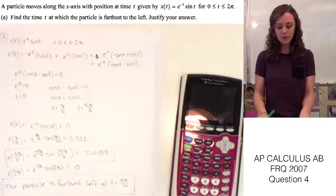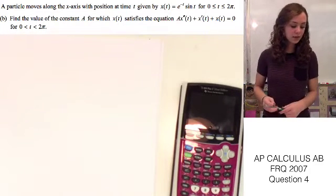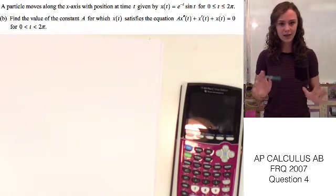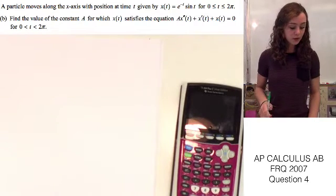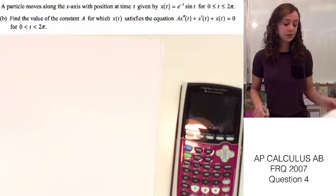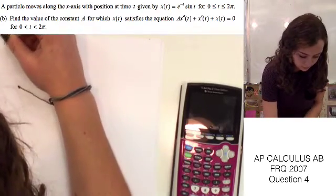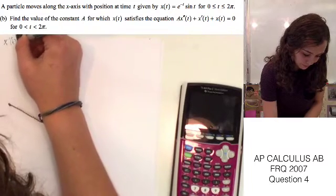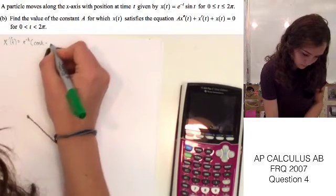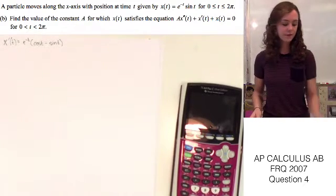On to part B. Part B asks us to find the value of a constant A for which x of t satisfies the given equation over the same time interval given in the introduction. In order to do this, we're going to have to find the first derivative along with the second derivative as our first step. Luckily, in part A we found the first derivative, so I'm just going to copy that down so we have it for future reference. Now let's use this and find the second derivative.